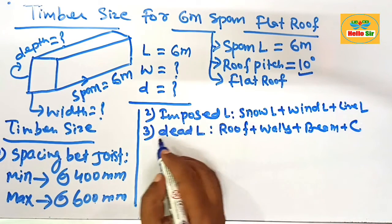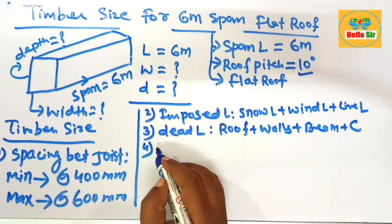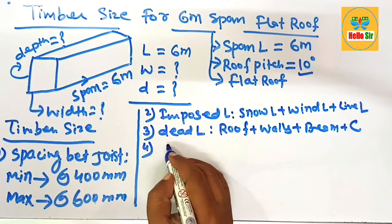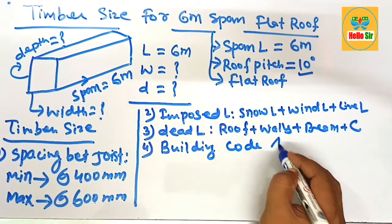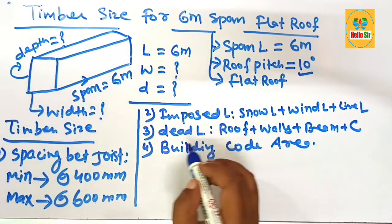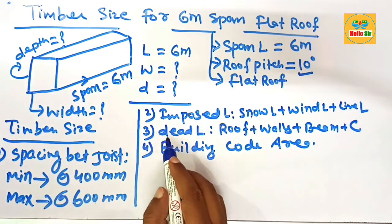This is dead load of the structure and the fourth major factor that decides the timber size is what will be building code in your area. This is the major factor that decides the timber size.